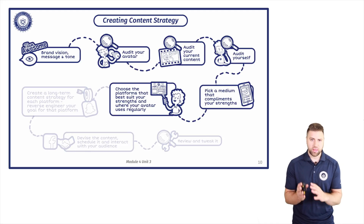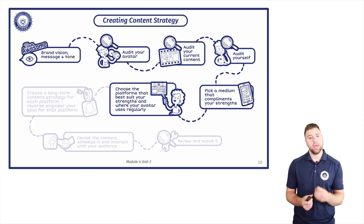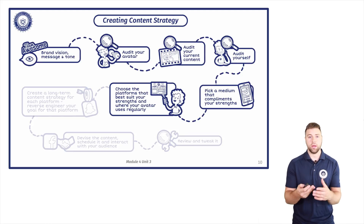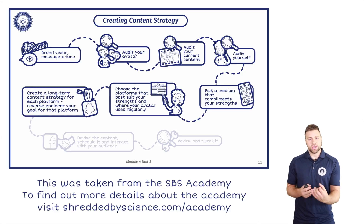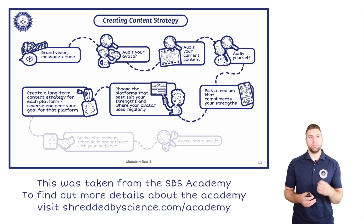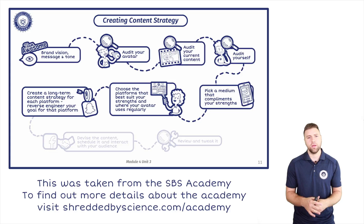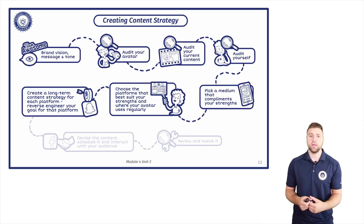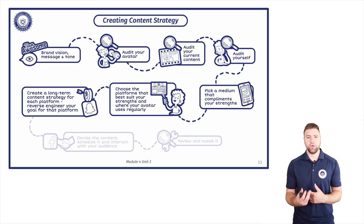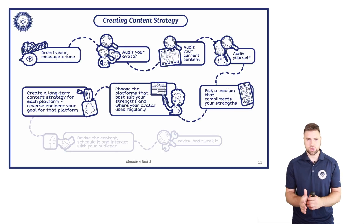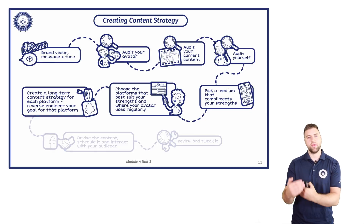Especially when starting off, look where your audience currently is, where their attention is, because that's key — then focus on those platforms they are using on a day-to-day basis. Once you've got all that information, it's time to create a long-term content strategy for each platform. Reverse engineer it: what is the outcome you want from Instagram, Snapchat, or Facebook? For example, for Shredded by Science, Facebook is more content-based around training and nutrition, but on Snapchat it's all about business mindset, social media, and marketing. Each platform has different strengths, and we've reverse engineered what we want to achieve from those platforms.